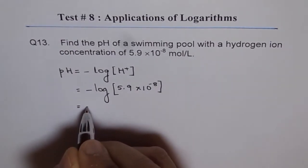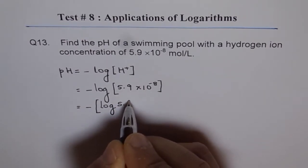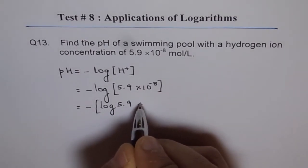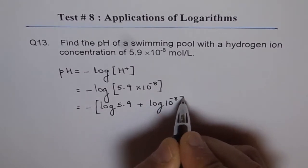Which we can write as minus of log 5.9 plus log of 10 to the power of minus 8.